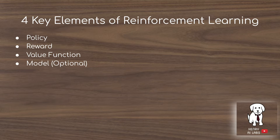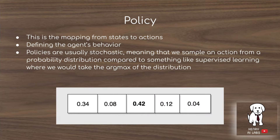There are four key elements of reinforcement learning to understand from chapter one: the idea of a policy, a reward, value functions, and then the optionality of having a model and the differences between model-based and model-free reinforcement learning. A policy is the mapping from states to actions — this is what defines the agent's behaviors. Policies are usually stochastic, so you sample from an action probability distribution, compared to supervised learning where you take the argmax of the distribution.